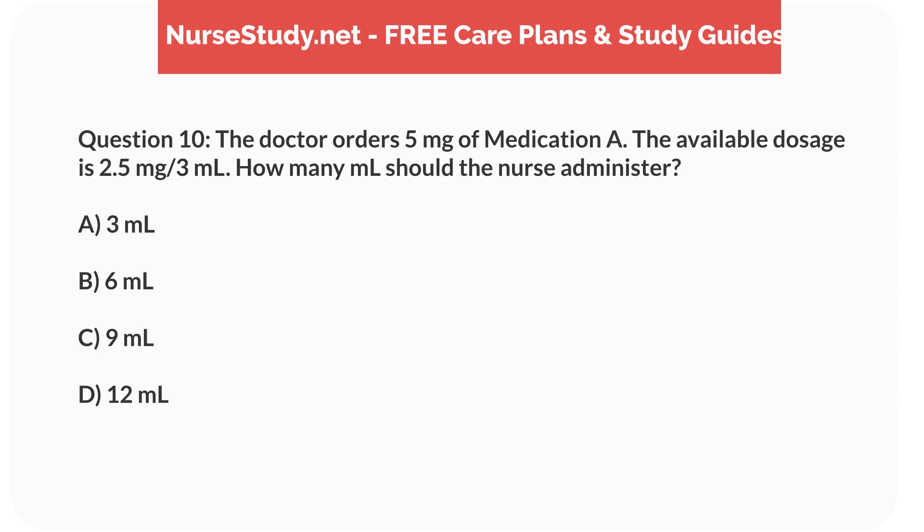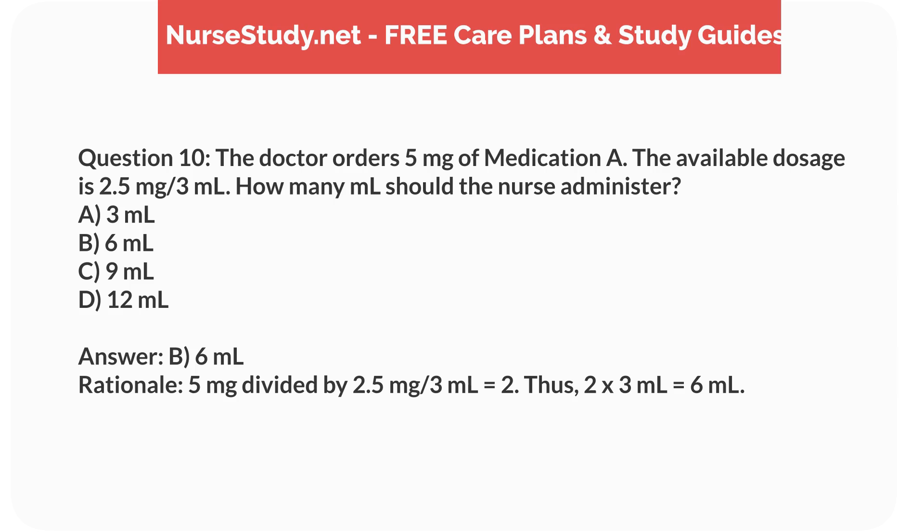Question 10. The doctor orders 5mg of medication A. The available dosage is 2.5mg per 3mL. How many mL should the nurse administer? a. 3mL, b. 6mL, c. 9mL, d. 12mL. Answer: b. 6mL. Rationale: 5mg divided by 2.5mg per 3mL equals 2. Thus, 2 times 3mL equals 6mL.